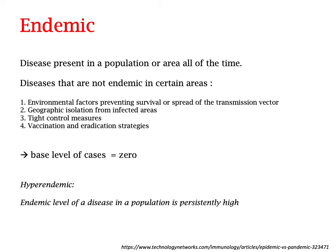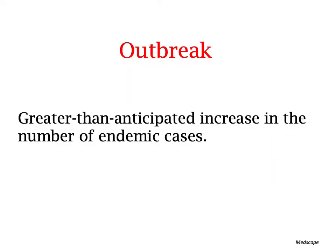On the other hand, hyperendemic means that the endemic level of a disease in a population is persistently high. So an outbreak is a greater than anticipated increase in the number of endemic cases. The terms epidemic and outbreak can often be used interchangeably, even in scientific literature. However, an outbreak is a limited type of epidemic.